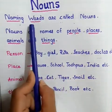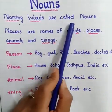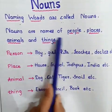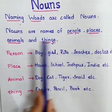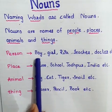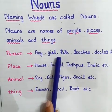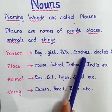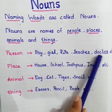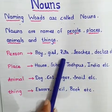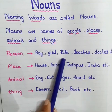Nouns. Naming words are called nouns. Nouns are names of people, places, animals and things. Boy, girl, Rita, teacher, doctor, etc. are some examples of a person or people.